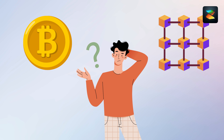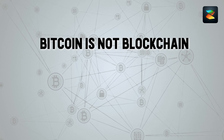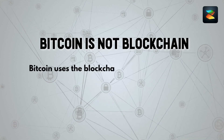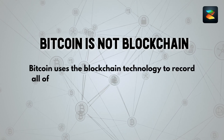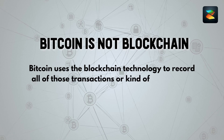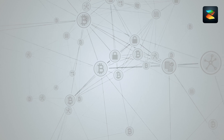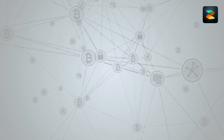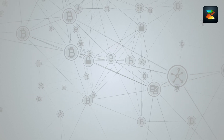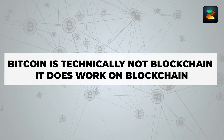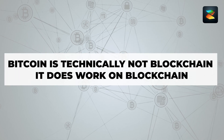A lot of people confuse Bitcoin with blockchain. Bitcoin is not blockchain — Bitcoin uses blockchain technology to record all of its transactions and maintain its ledger. Whatever voting happens with improvement proposals and whatnot, all of that is stored on blockchain. So Bitcoin technically is not blockchain; it works on blockchain.